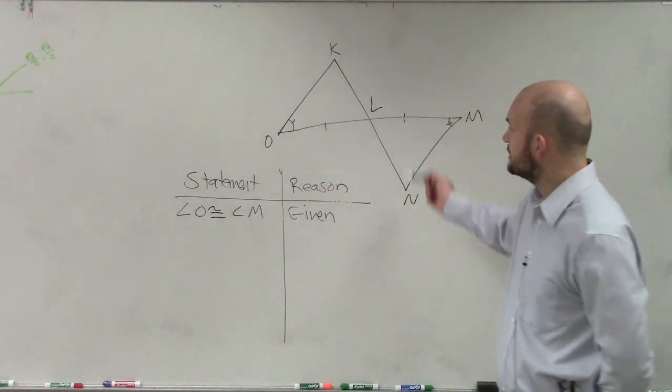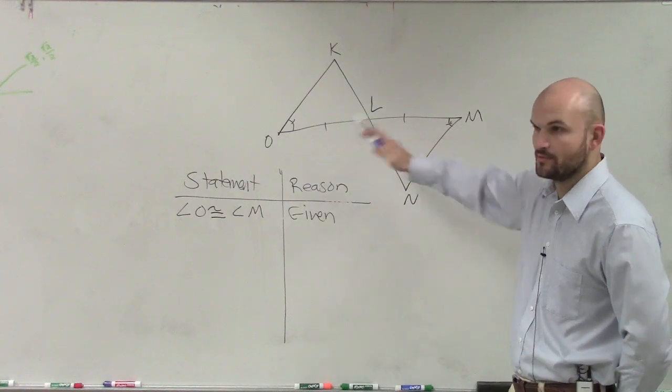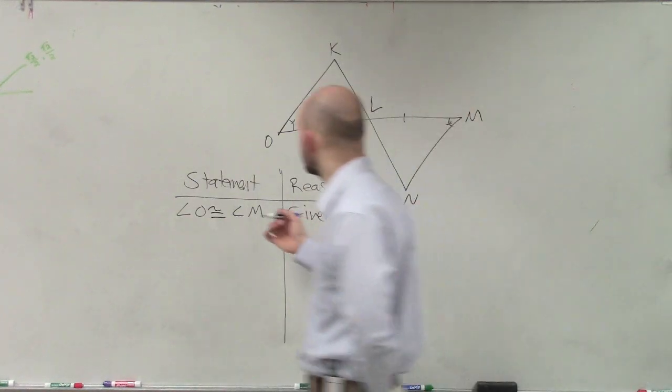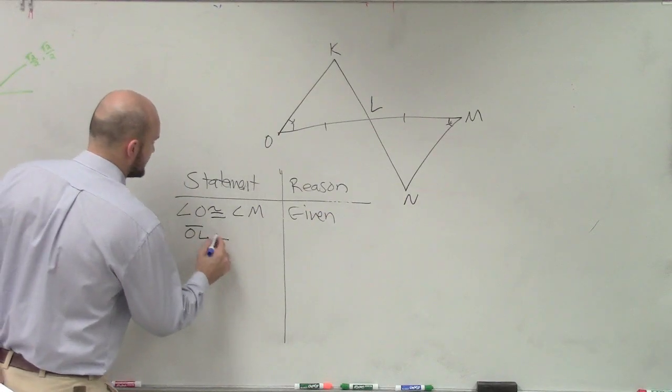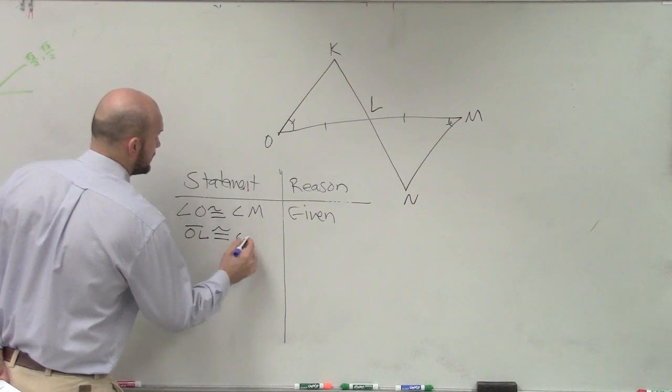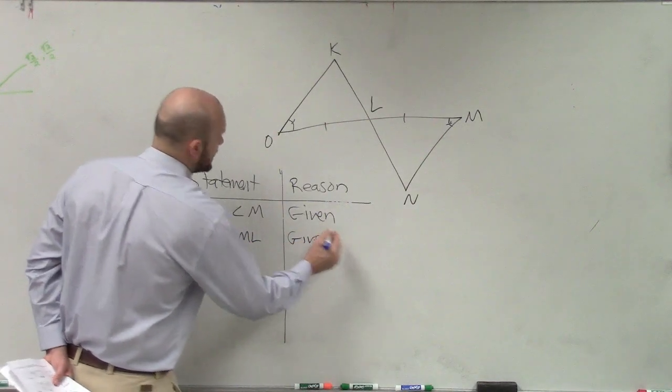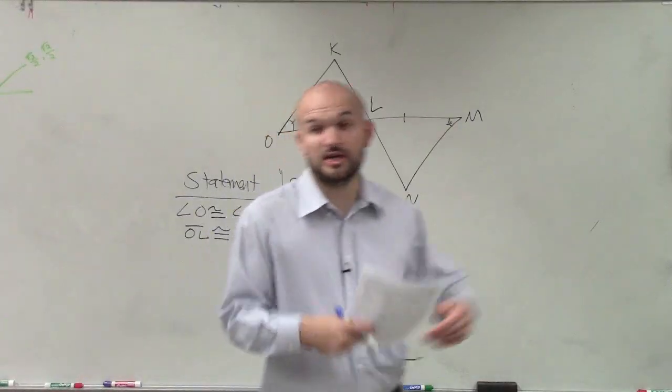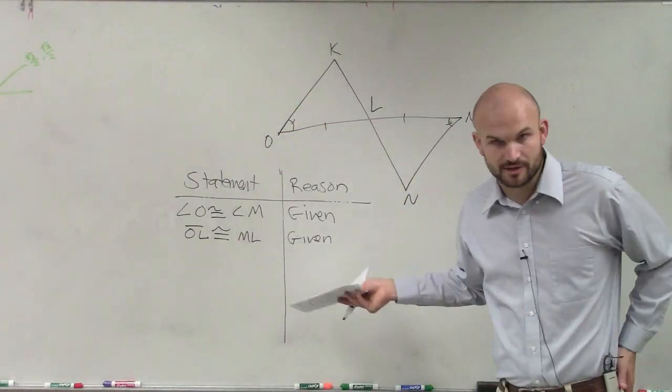Then the next thing is we can see that this line is congruent to that line, because they both have a tick mark. So they're equal in measure. So I can say the line OL is congruent to the line ML, because that's given. So the givens are either going to be written out for you or they're going to be provided in your figure.